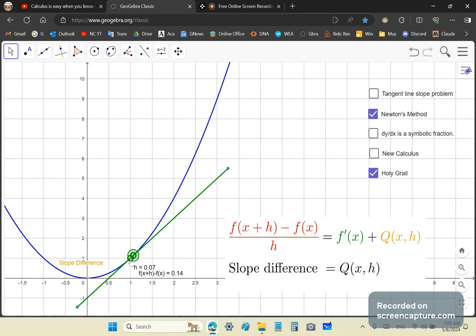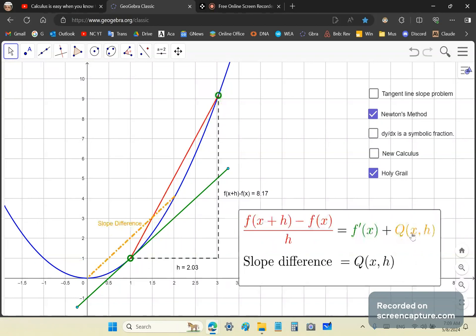The slope difference is the difference between this red secant line and the green secant line. What it means is that as you get to the point of tangency, the slope difference disappears. There's no more difference.